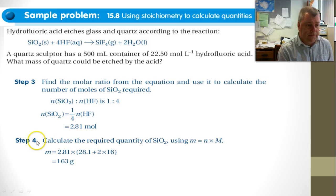And so step 4 is, now that we've got the moles of silicon dioxide, or quartz, we calculate the quantity, so the mass. So we're going to use m equals n times capital M. This is our moles. This is our molar mass for silicon dioxide, and that results in the amount of silicon dioxide that's actually going to be etched away is 123 grams.